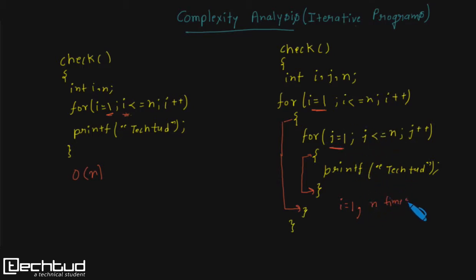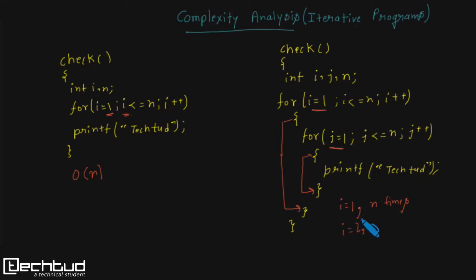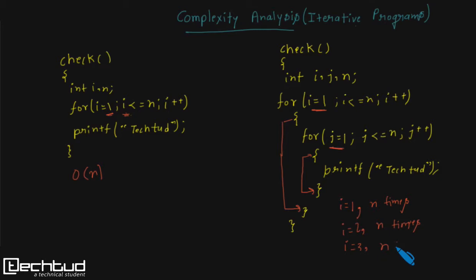When j becomes greater than n, you will come out from the inner for loop and go back to the outer for loop, where i is incremented to two. For i equals to two, the same procedure follows — the loop starts from one and goes till n, executing n times. For i equals to three, it will also execute n times.